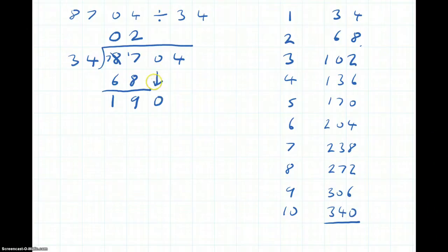Zero. Does 34 go into 190? We keep coming down here. We see that 5 34s are 170. So it goes 5 times into 190.